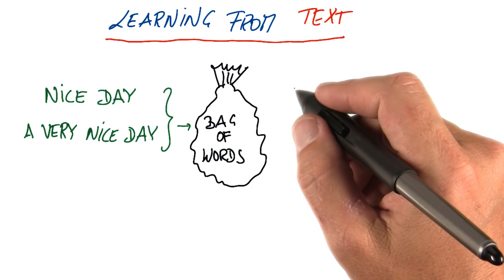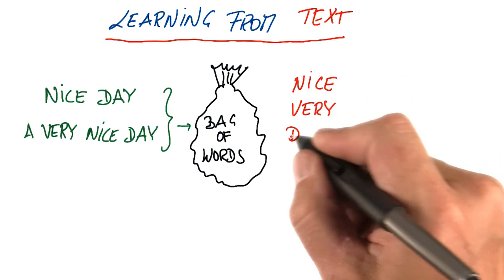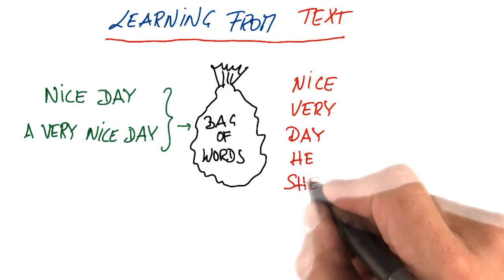So the trick is to impose a dictionary, so you have all the words you know. Obviously, they include words like nice, very, day. They might include words that don't occur on the left side, like he, she, love.